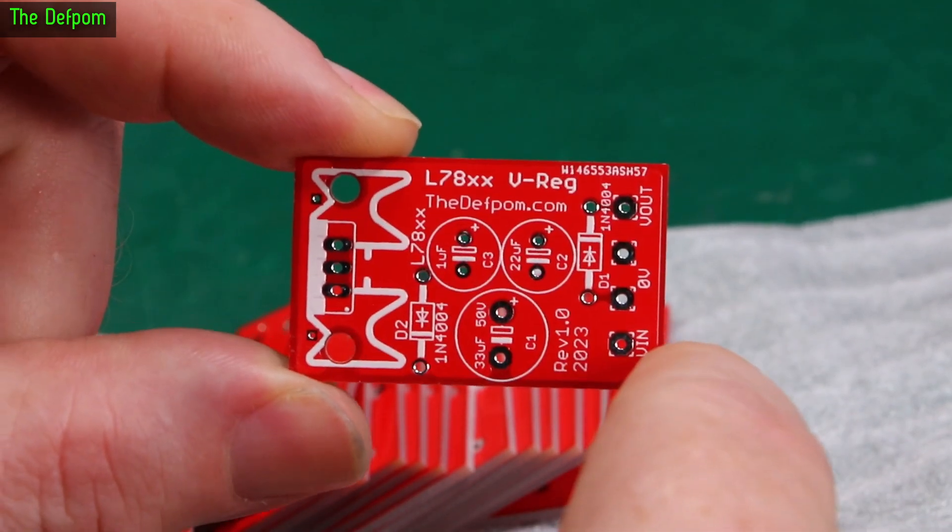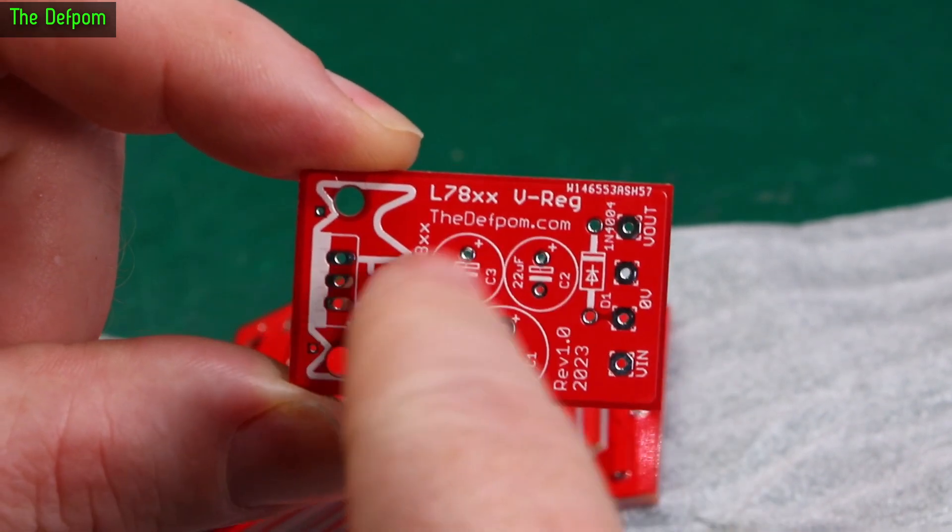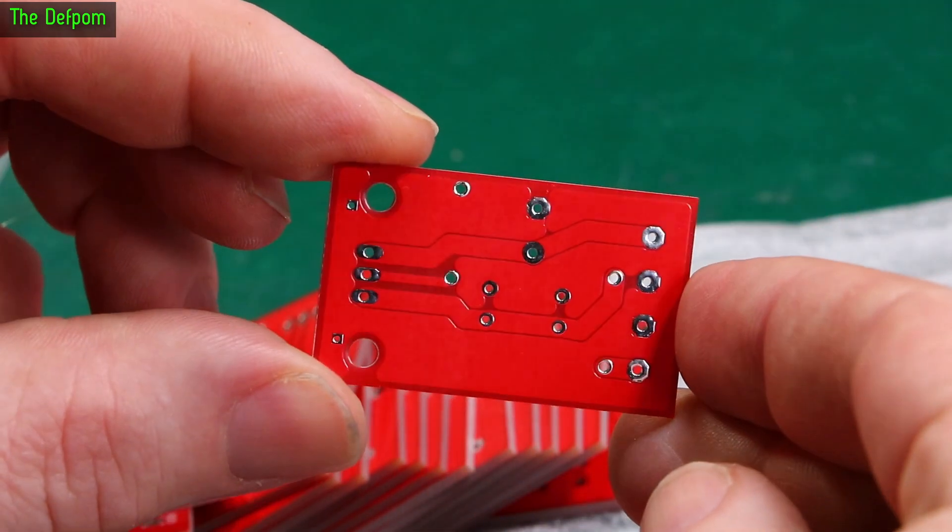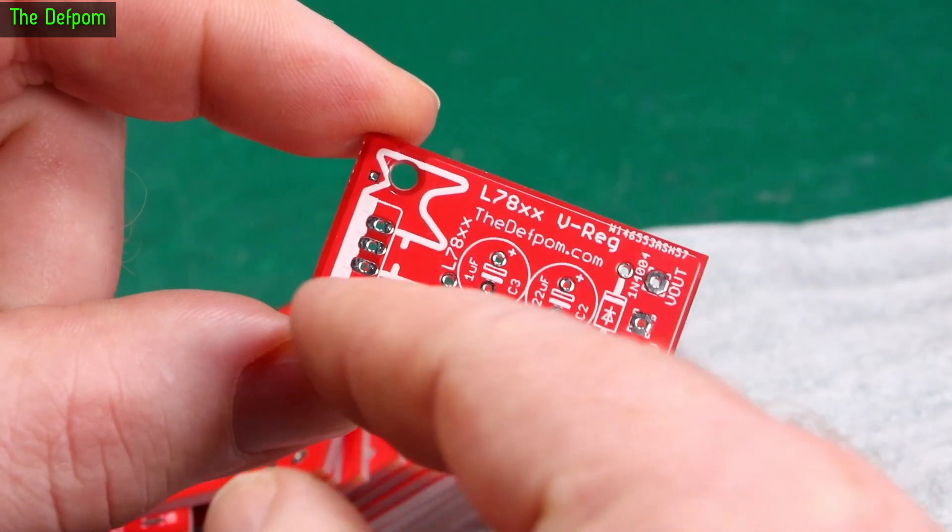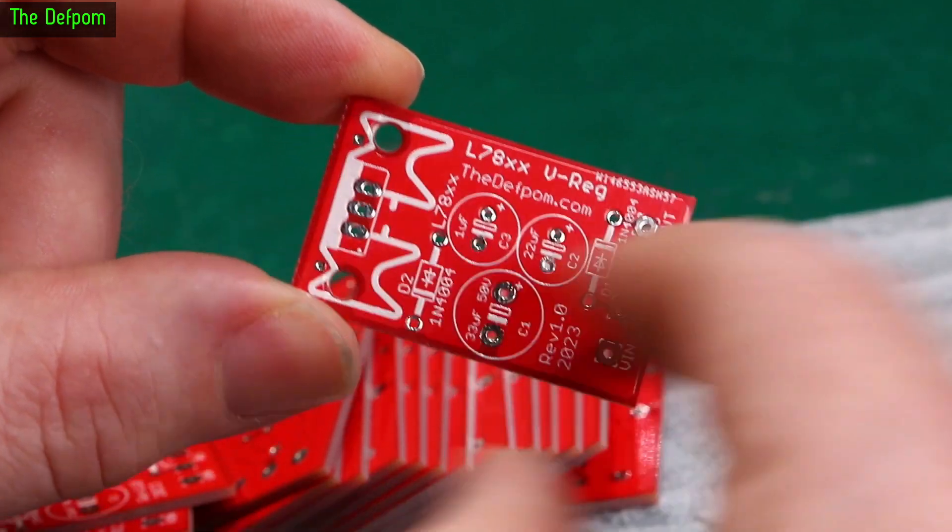This is basically a linear voltage regulator board. So you put a 78 series regulator in here. It's got room for capacitors, diodes. There's the back. Nothing weird to see on the back there. Simple little board. So you put a 78 series regulator in here. There's room for a heatsink on here. It's got some mounting holes in case you need them.